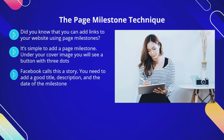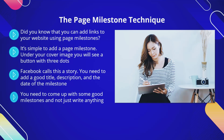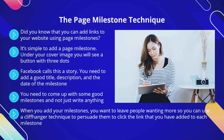You can add a link to an external website to your milestone using the full URL as you did in the About tab. Your milestones are your story and they provide a good way for you to connect with your audience. Add milestones that will trigger emotions — people love zero-to-hero stories, so make good use of this. When you add your milestones, you want to leave people wanting more, so you can use a cliffhanger technique to persuade them to click the link you have added.